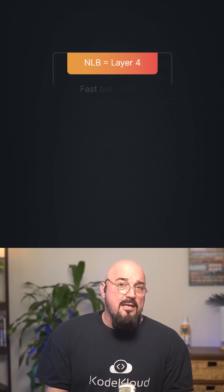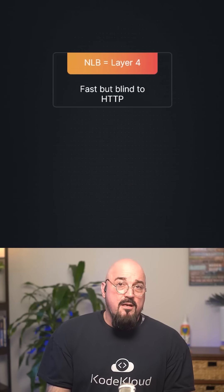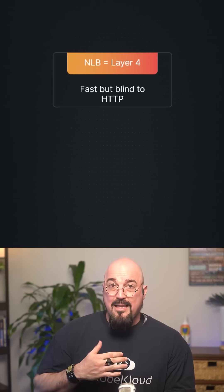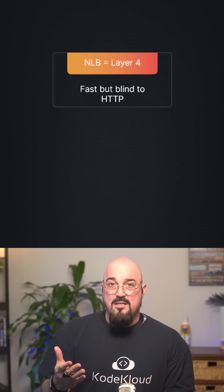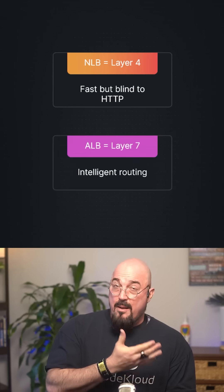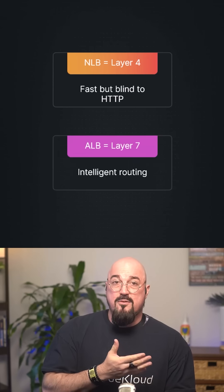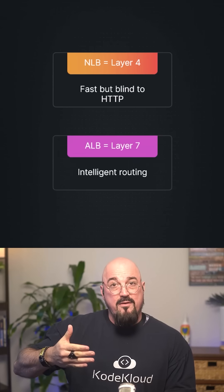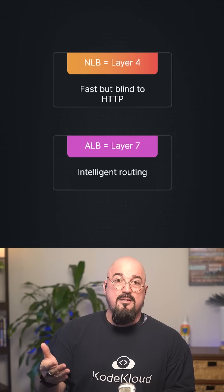NLB equals layer four — fast but blind to HTTP. An ALB, or application load balancer, is a layer seven router with intelligent routing.